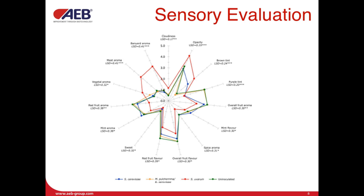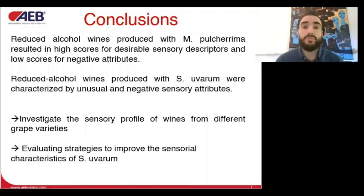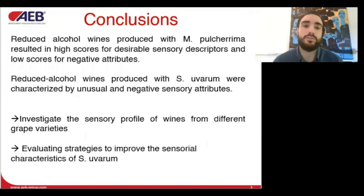Metschnikowia pulcherrima and uninoculated wines showed higher scores for sensory descriptors that would be considered positive and desirable, and low scores for negative sensory attributes, even though they had high concentrations of ethyl acetate and total sulfur compounds. In contrast, wines fermented with Saccharomyces uvarum showed a sensory profile mostly dominated by unusual and negative sensory attributes that would conventionally be considered off-flavors. Metschnikowia pulcherrima succeeded in producing reduced ethanol content wine with desirable sensory characteristics, while Saccharomyces uvarum reduced the ethanol but the wine had negative sensory attributes.